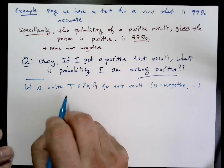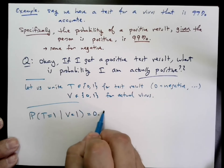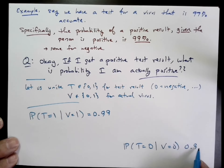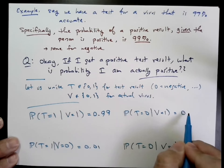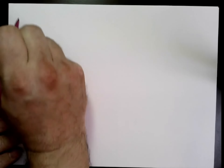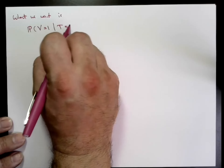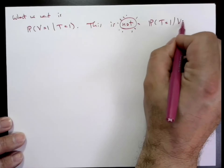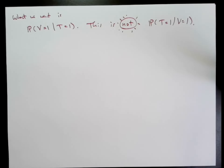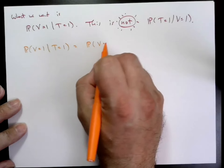The probability that the test is positive given that the virus is there is 99%. The probability that the test is negative given that the virus is not there is also 99%, but the wrong test results have a probability of 1%. The conditional probability we're trying to determine is the probability that V equals one given that T equals one — the probability that the virus is there given a positive test. Note this is not the probability that T equals one given V equals one; when we flip A and B in the conditional, we can get a different answer.